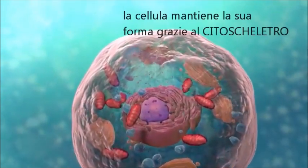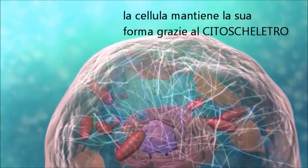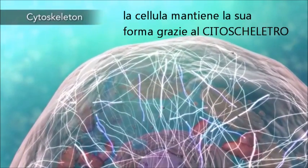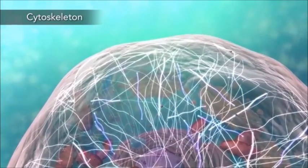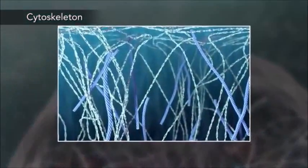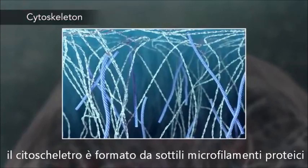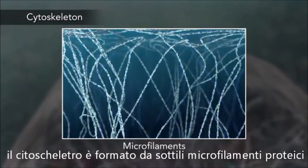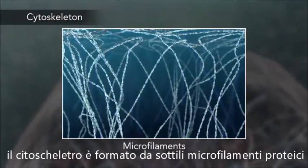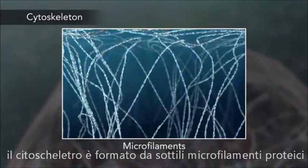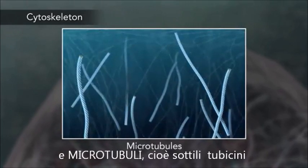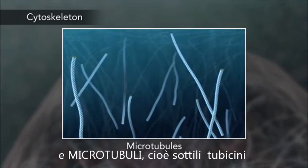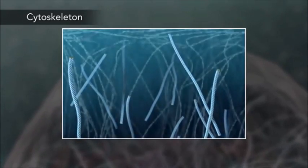Meanwhile, the cell maintains its shape through a cytoskeleton. The cytoskeleton includes the thread-like microfilaments, which are made of protein, and microtubules, which are thin, hollow tubes.